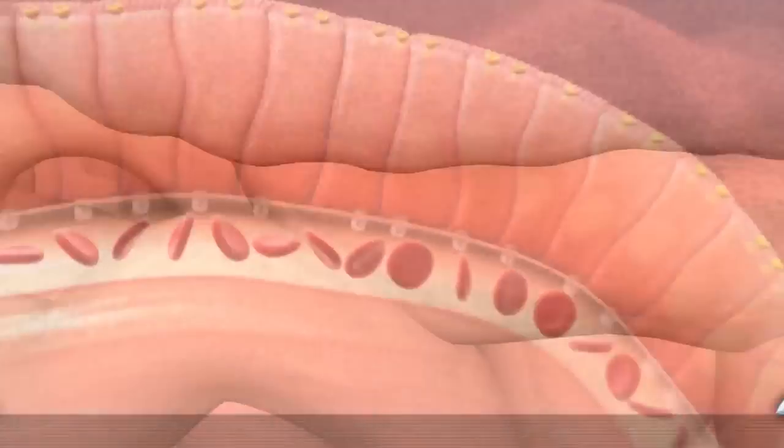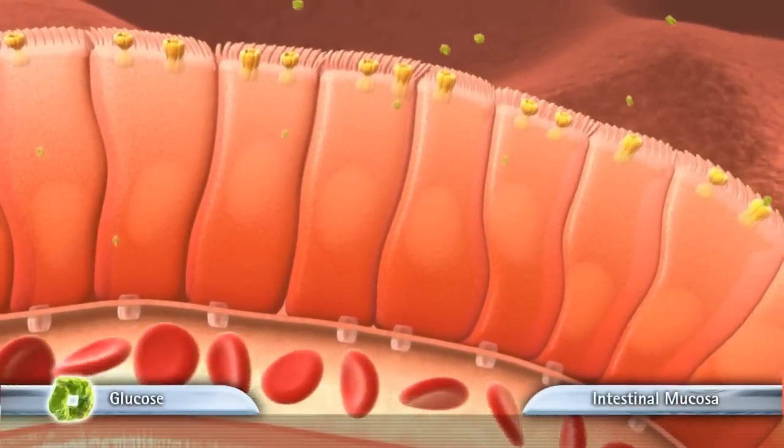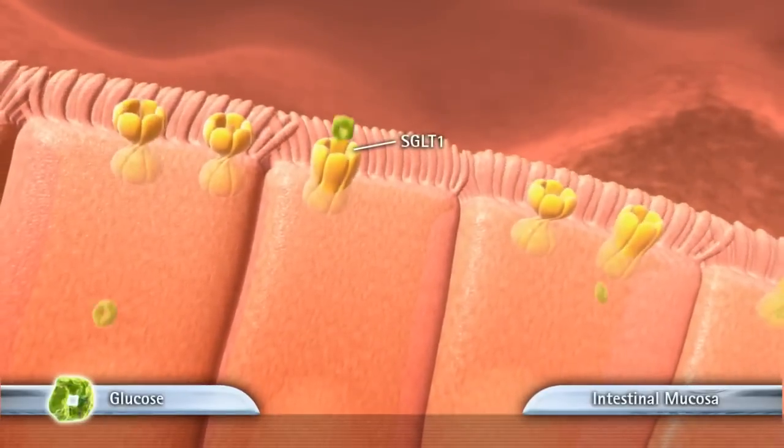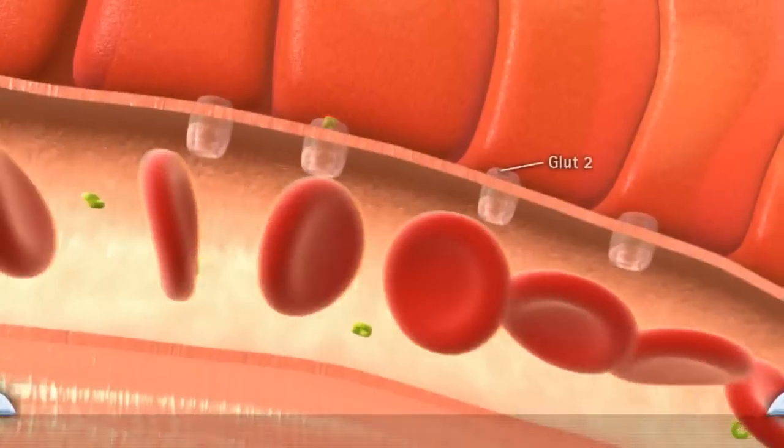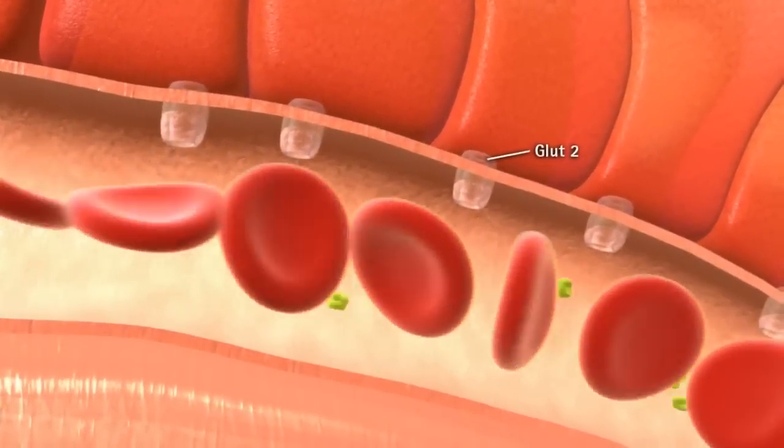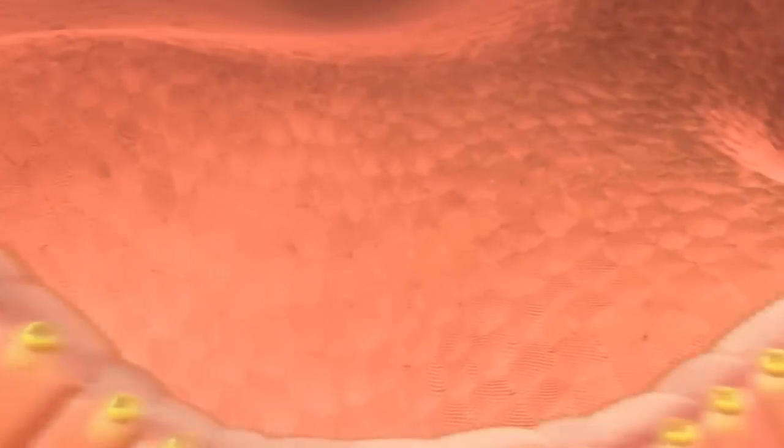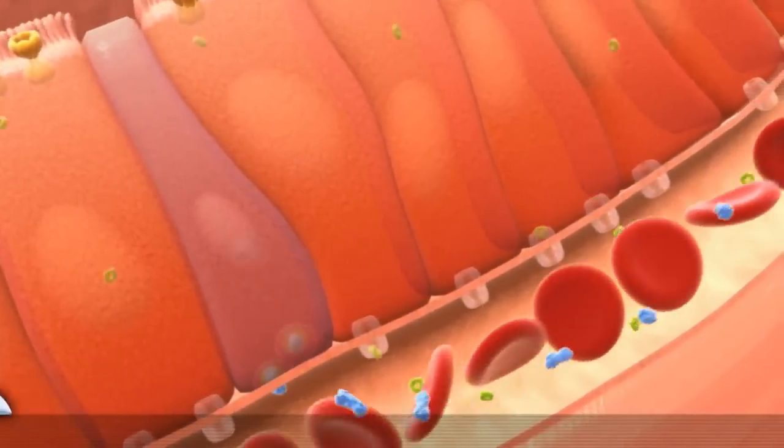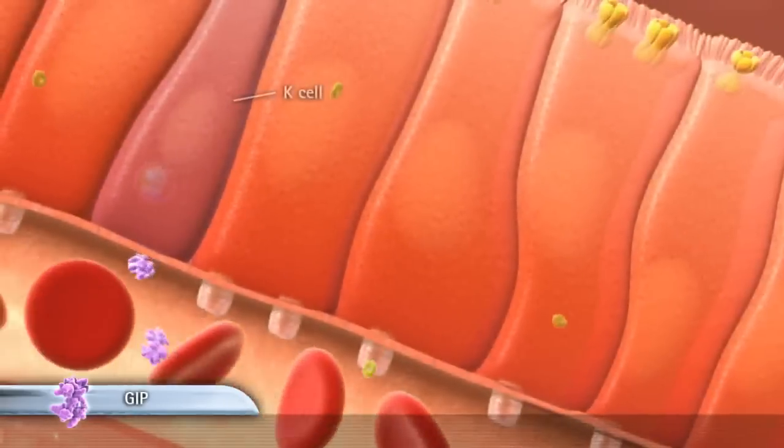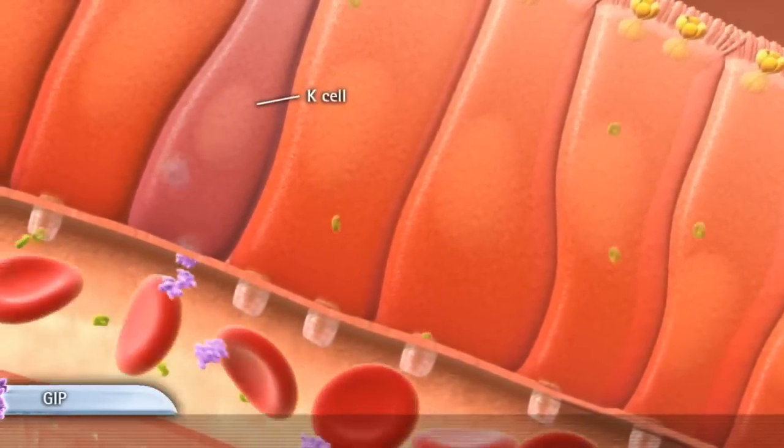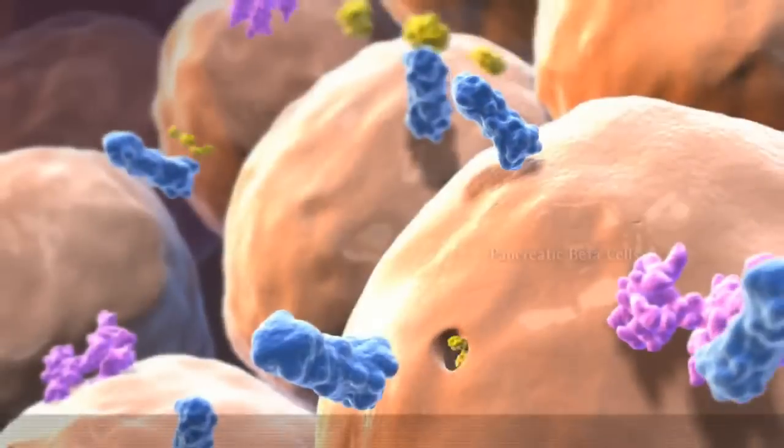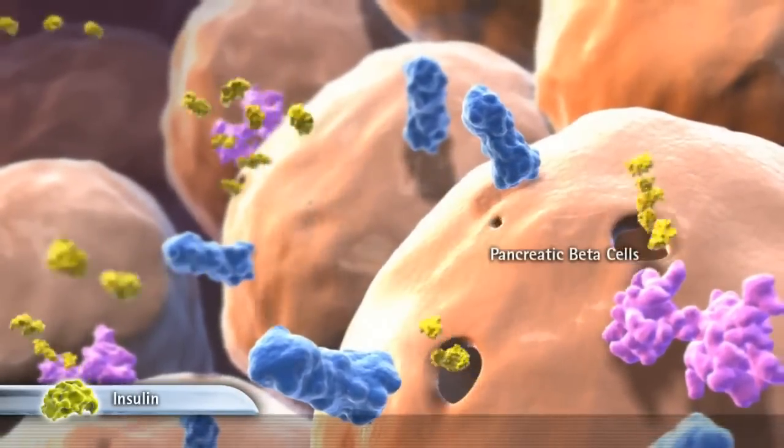After a meal, the intestine absorbs glucose via the sodium glucose transporter 1, known as SGLT1, and delivers it to the blood. In response to glucose absorption, the intestine secretes two major incretin hormones: glucagon-like peptide GLP-1 and glucose-dependent insulinotropic polypeptide GIP, which together with increased levels of glucose augment the secretion of insulin from the beta cells of the pancreas.